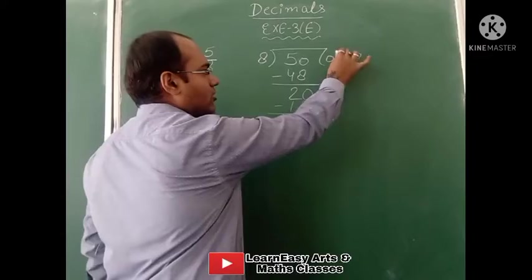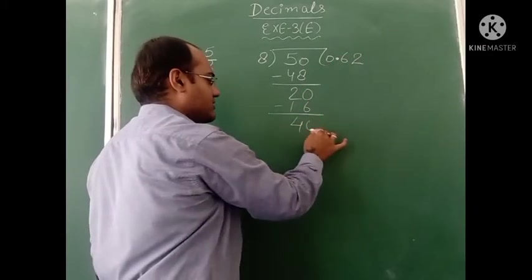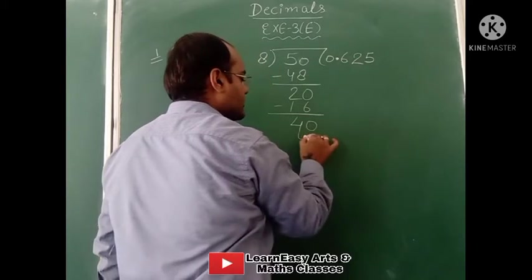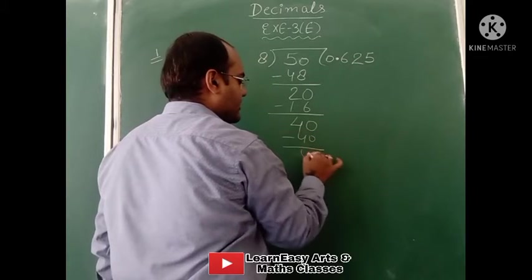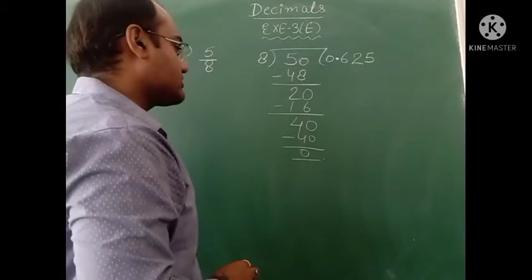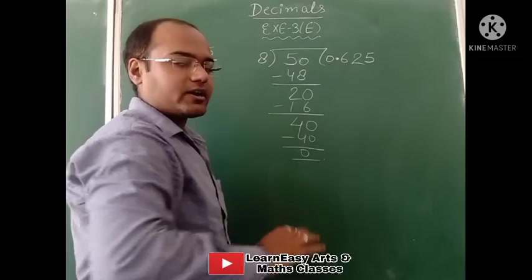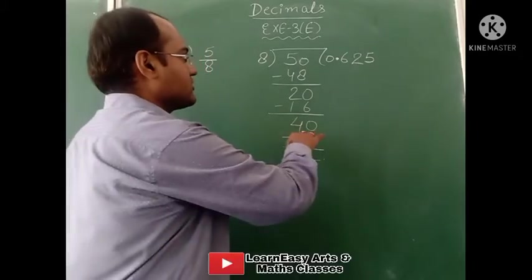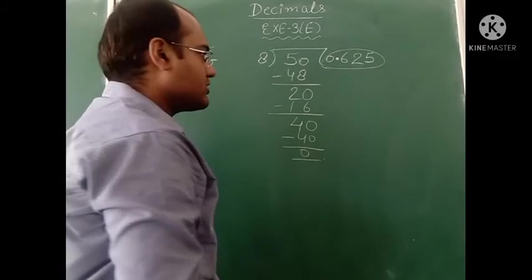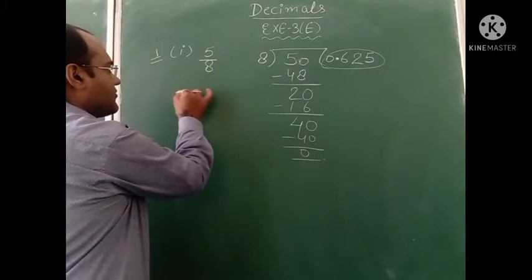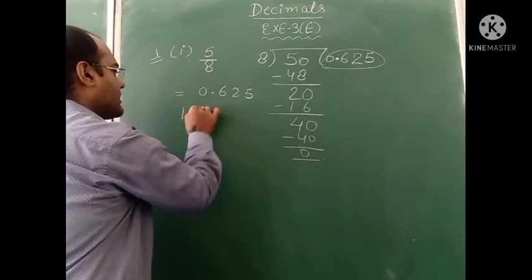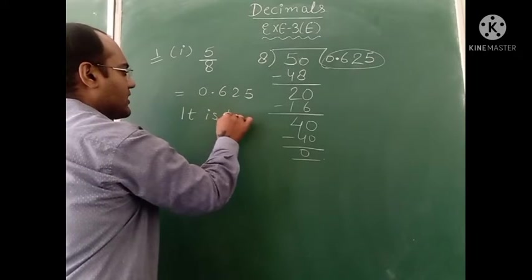Decimal is already in the answer, so we can add 0 in this step also. 8 times 5 is 40. Finally, we are getting remainder 0. So here we got remainder is 0. Such division in which we get remainder 0 — such decimal numbers are known as terminating decimal.